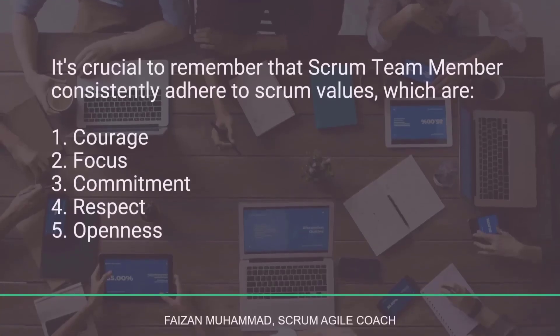In a scrum environment, team members are no longer part of functional silos within a matrix organization. Developers are no longer solely part of software development competence centers, and testers don't exclusively belong to software testing competence centers. Members of the scrum team now belong to their specific scrum project. Their primary objective is to create the best possible software to fulfill the requirements of their scrum product owner. Key characteristics of the scrum team include empowerment, autonomy, cross-functionality, self-organization, small size, and full-time engagement.